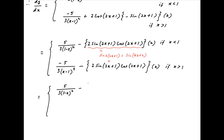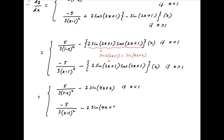Using this result, dy/dx equals 5/3·(1-x)² − 2·sin(4x+2) if x is less than 1, and dy/dx equals −5/3·(x-1)² − 2·sin(4x+2) if x is greater than 1. This is the required answer.